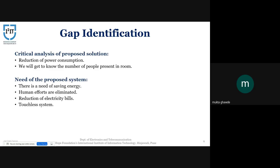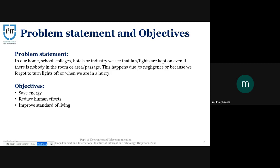Now let's move to the problem statement and objectives. In our schools, colleges, public restrooms, or seminar halls, lights are kept on even when there is nobody in the room, due to negligence or when we are in a hurry. The objectives of our project are to save energy by automatically switching off the lights and to reduce human efforts.